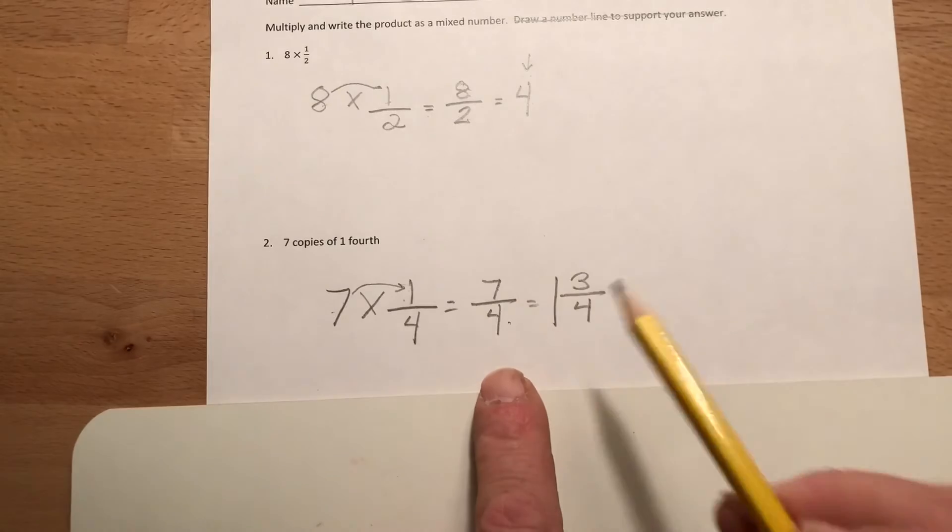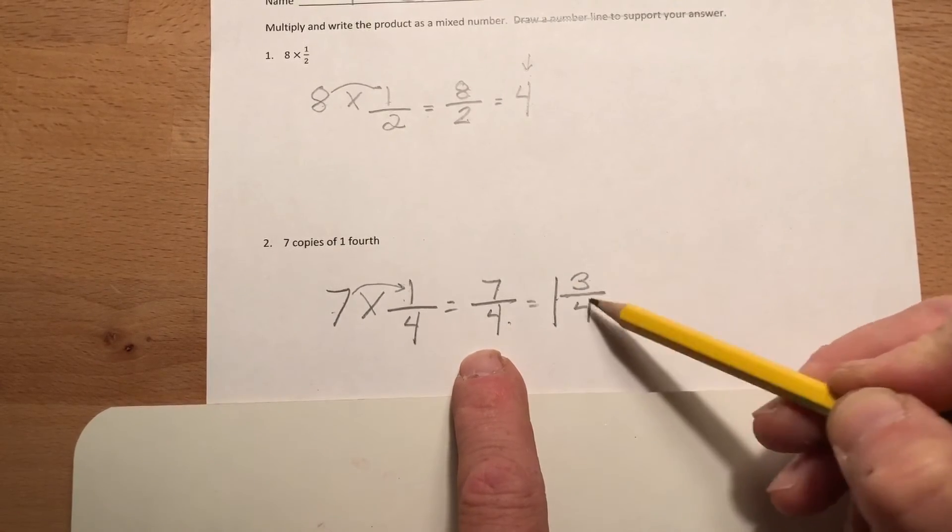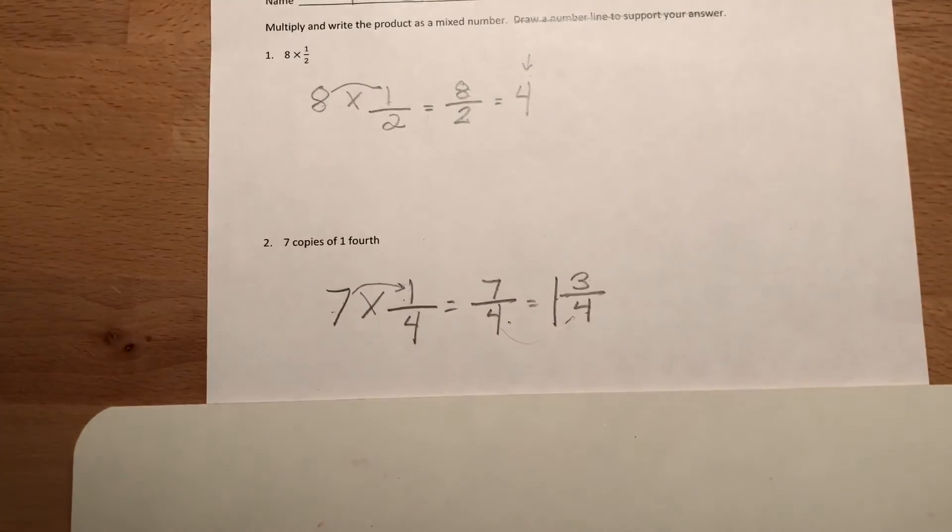So I have seven-fourths and I have to change it to a mixed number. So four goes into seven one full time. There's three left over and fourths is my unit. So one and three-fourths.